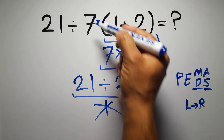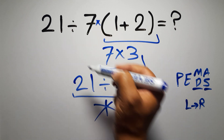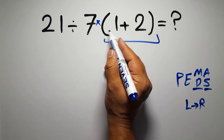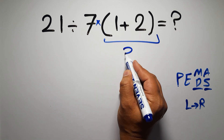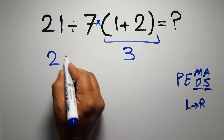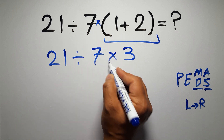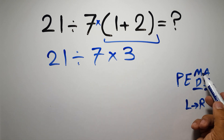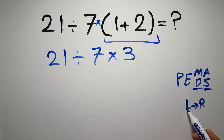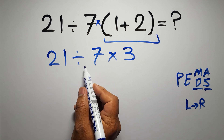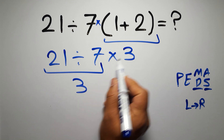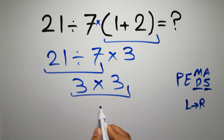...and finally the multiplication. If we do the multiplication before the division, it is wrong. So first we do the parentheses: 1 plus 2 gives us 3, giving us 21 divided by 7 times 3. Now we have one division and one multiplication with equal priority, so working left to right, 21 divided by 7 gives us 3, and 3 times 3 equals 9. The correct answer is 9.